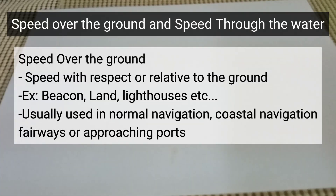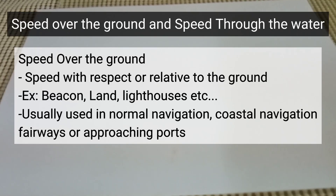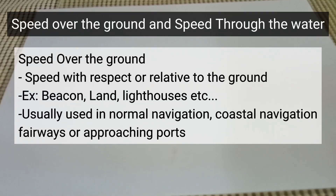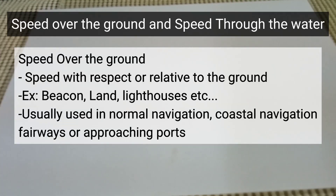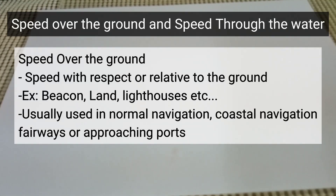Let's start with speed over the ground. This is the speed with respect to, or relative to, the ground or other fixed objects that you will find at sea, like beacons, land, and lighthouses, etc. It is commonly used in normal navigation — coastal navigation — and when your vessel is approaching fairways or ports.